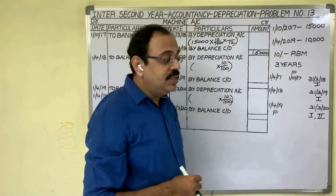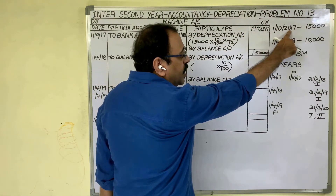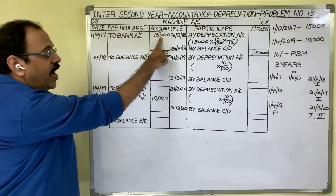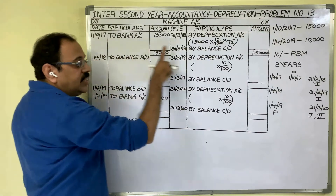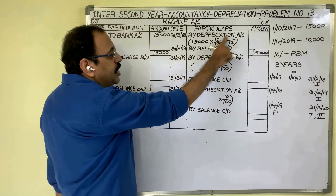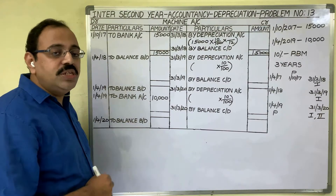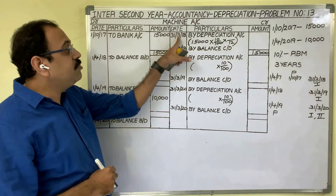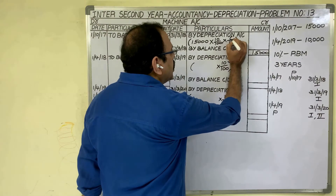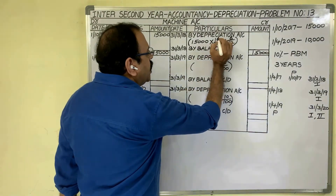Now let us prepare the machine account. On the debit side, write 'Bank' with the purchase value of 15,000 rupees on 1st October 2017. At the end of the first year, 31st March 2018, we provide depreciation. The formula is: 15,000 × 10/100 × 6/12, since the asset was used for only six months from 1st October 2017 to 31st March 2018.